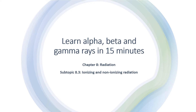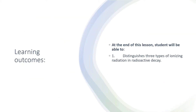It is under Chapter 8, Radiation, Subtopic 8.3, Ionizing and Non-Ionizing Radiation. So for today's lesson, the learning outcomes are: at the end of this lesson, students will be able to distinguish three types of ionizing radiation in radioactive decay.